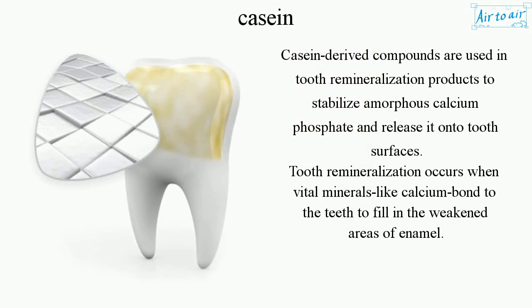Casein-derived compounds are used in tooth remineralization products to stabilize amorphous calcium phosphate and release it onto tooth surfaces. Tooth remineralization occurs when vital minerals like calcium bond to the teeth to fill in the weakened areas of enamel.